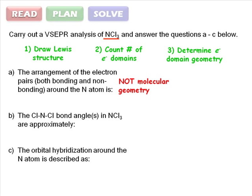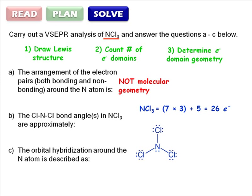So to solve the question, execute your plan. To draw a Lewis structure, we first need to know how many valence electrons the molecule has. In NCl3, there are three chlorine atoms with seven electrons each, and one nitrogen atom with five electrons, for a total of 26 electrons. With those 26 electrons, we can fill the octets of all four atoms.